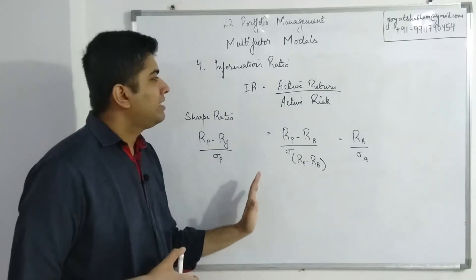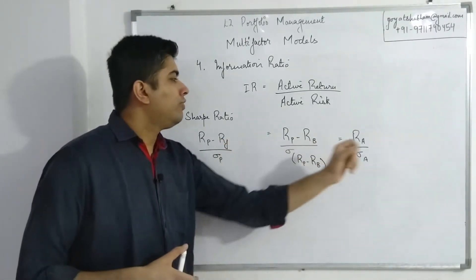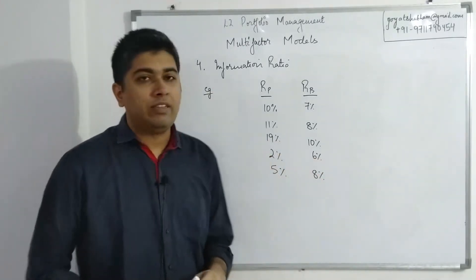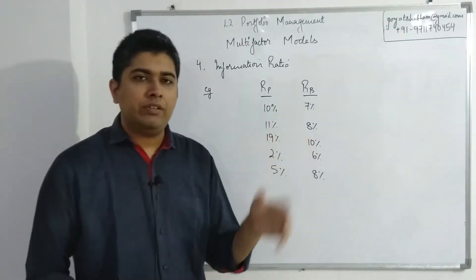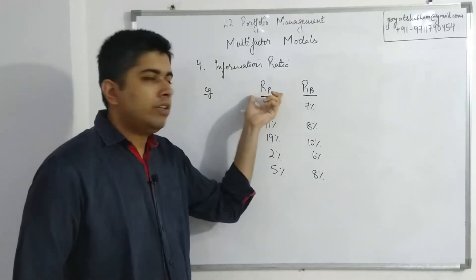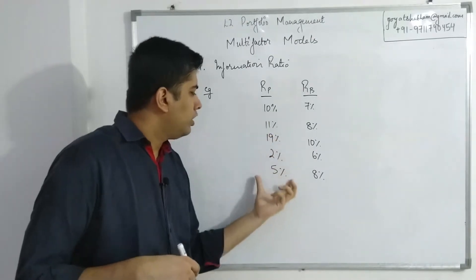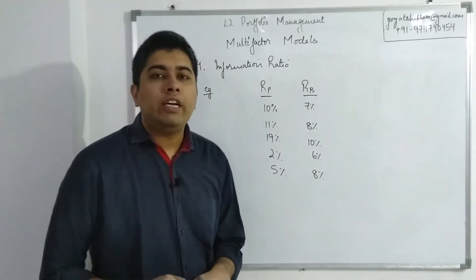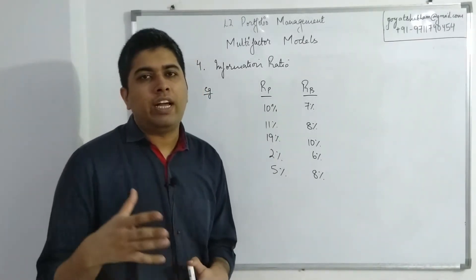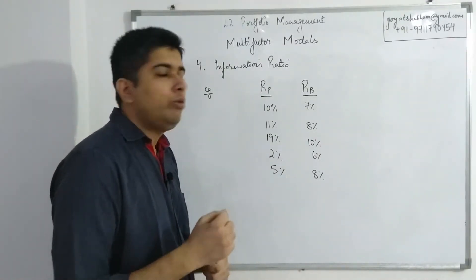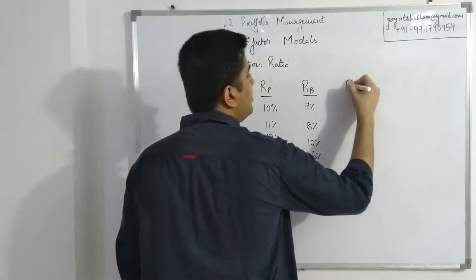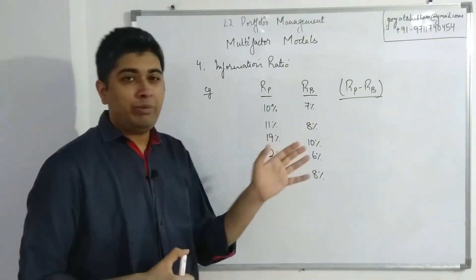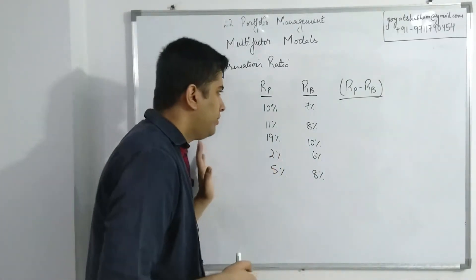Let's take a small example to cover how to calculate active return, active risk, and information ratio. Suppose you have been operating a portfolio for the last five years, and you have the annual returns earned on the portfolio — say 10% in year one, 11% in year two, and so on for five years. You also have the benchmark returns for the last five years. To calculate the information ratio or any element of it, the best and fastest method is to create a third series representing the difference between the portfolio and benchmark returns each year. This should be the first step.